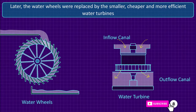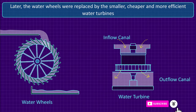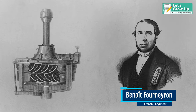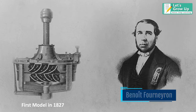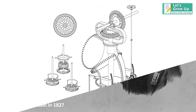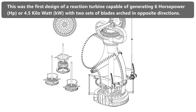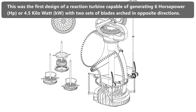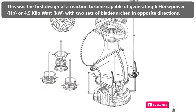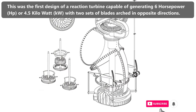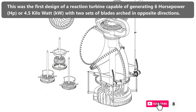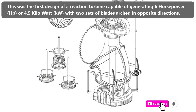Later, water wheels were replaced by smaller, cheaper, and more efficient water turbines when the French engineer Benoit Fourneyron introduced the first model in 1827. This was the first design of a reaction turbine capable of generating six horsepower or 4.5 kilowatts, with two sets of blades arched in opposite directions.